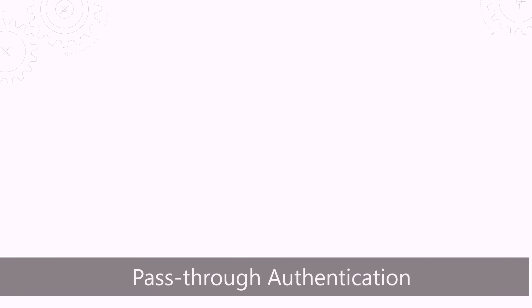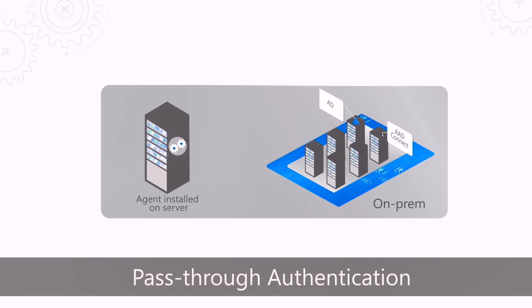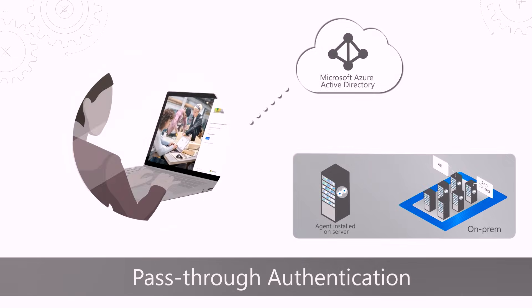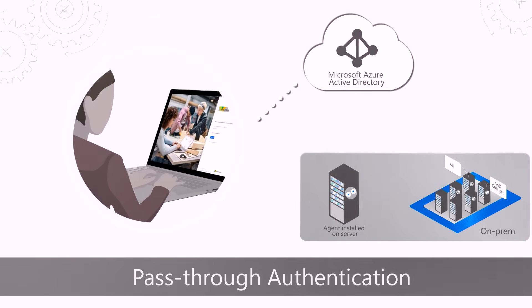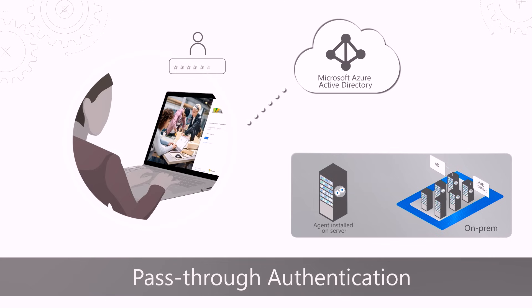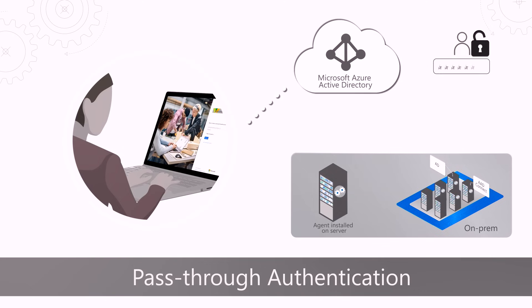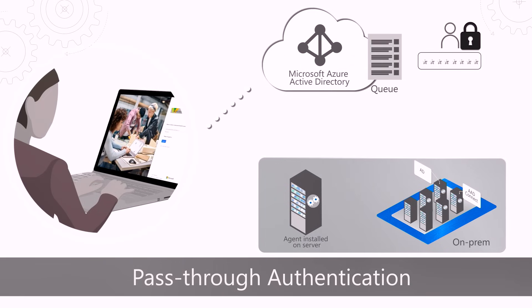Let me show you how pass-through authentication works. We start by installing a lightweight on-premises agent on the same server as Azure AD Connect. We recommend installing additional agents on other servers to get high availability of sign-in requests. You can install these agents on domain controllers too, for example. These agents require zero management and will auto-update. When the user enters their username and password on the Azure AD sign-in page, our service encrypts the password using a public key and then places the username and encrypted password on a queue for validation.